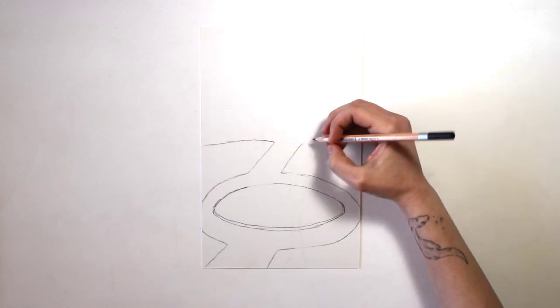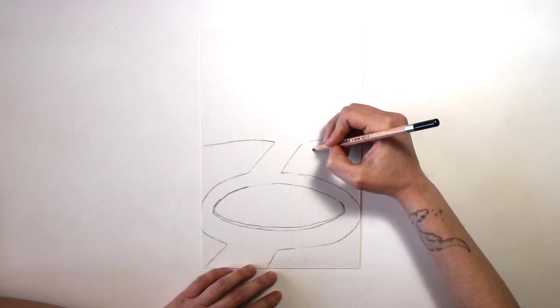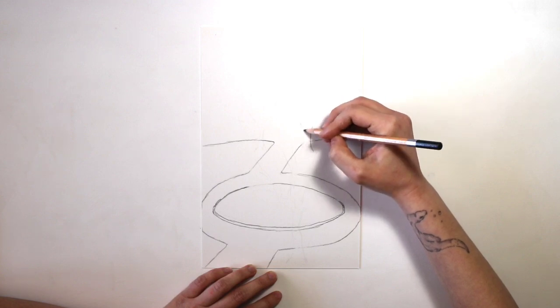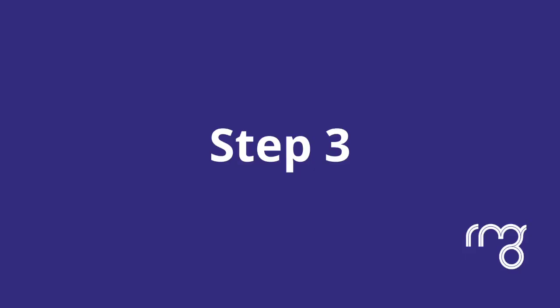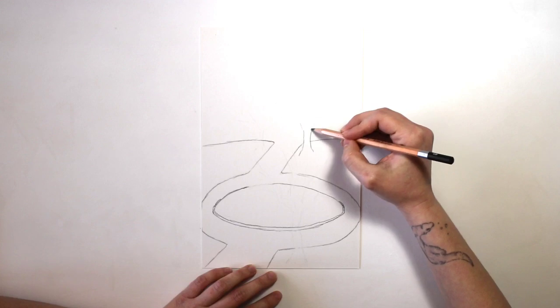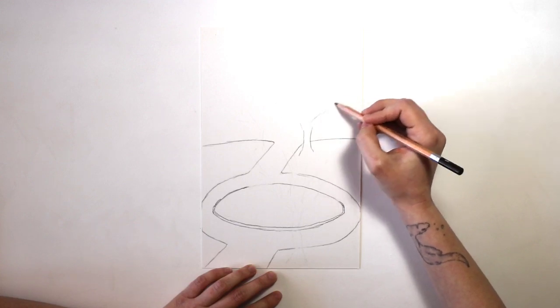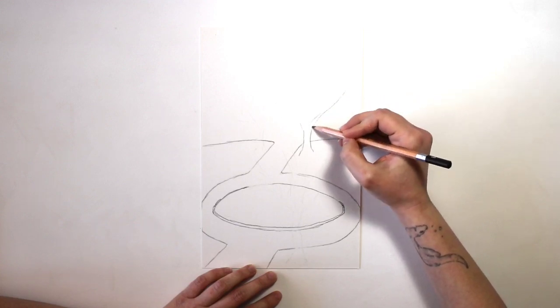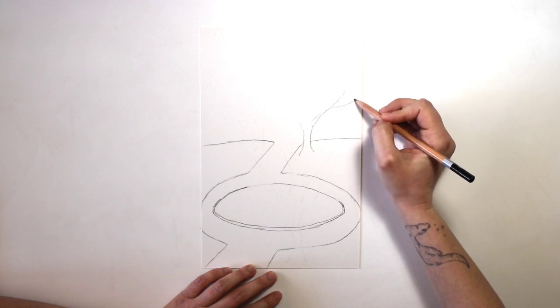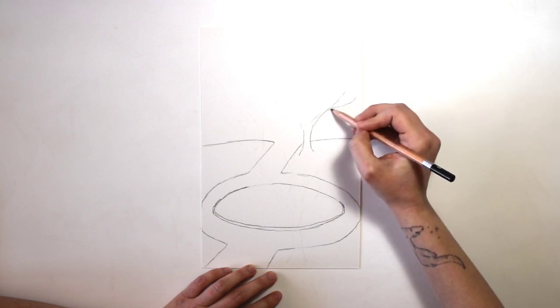The wonderful thing about sketching what you see is that you get to choose what makes it into your drawing and what doesn't. I'm drawing the trees on my court because that's what I find beautiful as I look out my window, but you might have interesting looking houses or cars that you want to sketch.